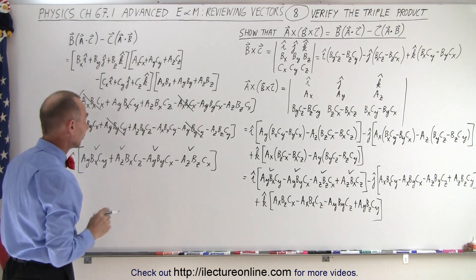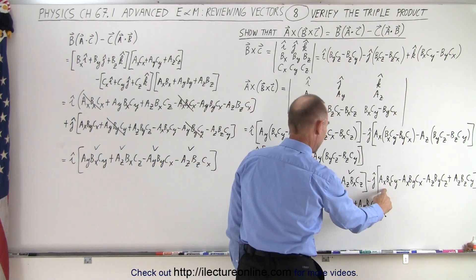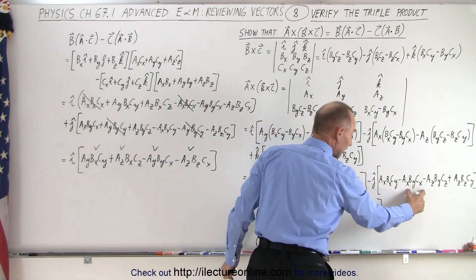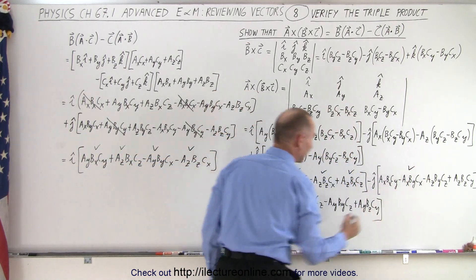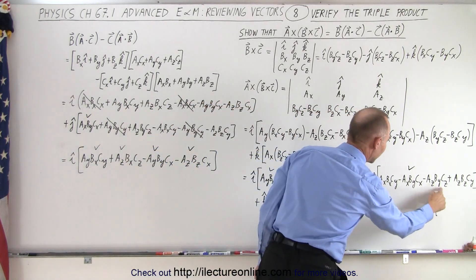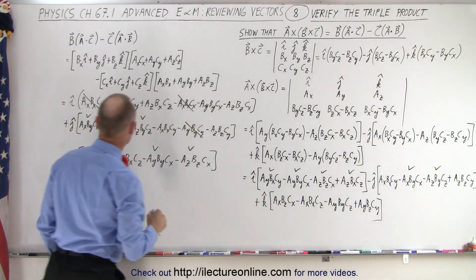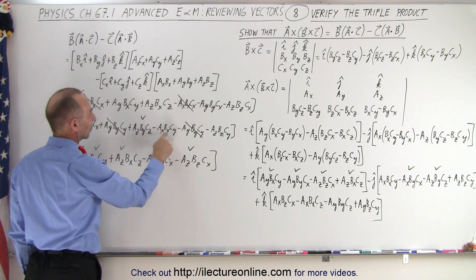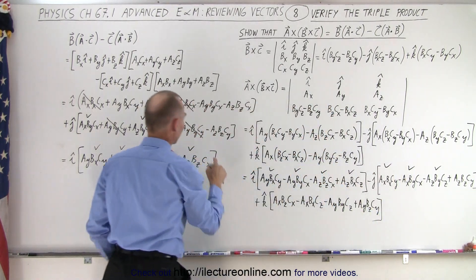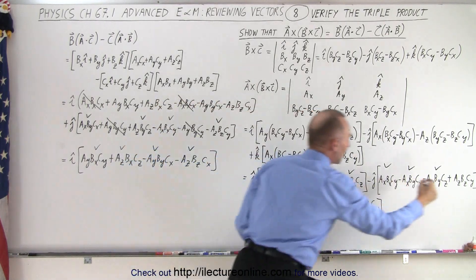After cancellation we find four remaining J terms: AX·BY·CX (positive on both sides, since a negative times a negative gives positive), AZ·BY·CZ (also matching), minus AX·BX·CY (minus on both sides), and minus AZ·BZ·CY (minus on both sides). All four J component terms match between the two sides.